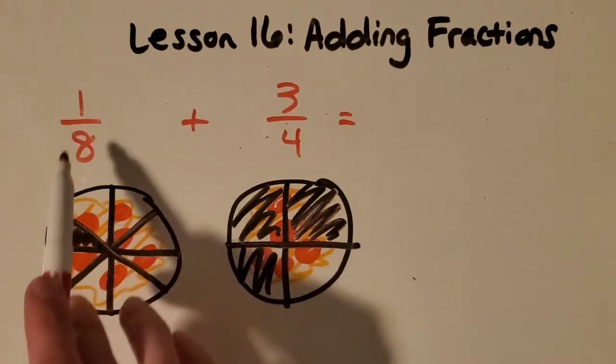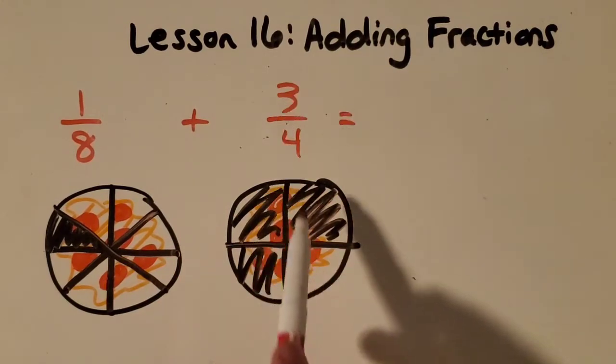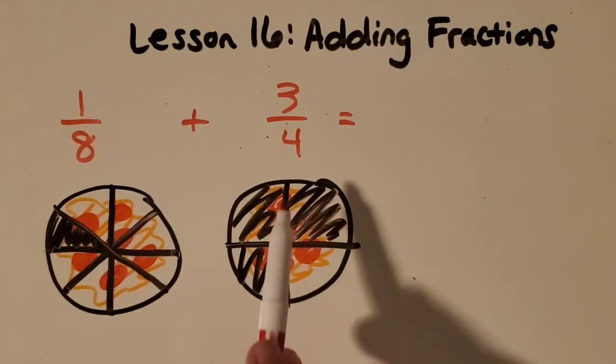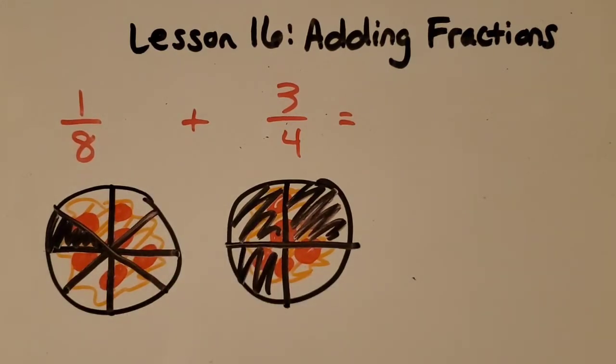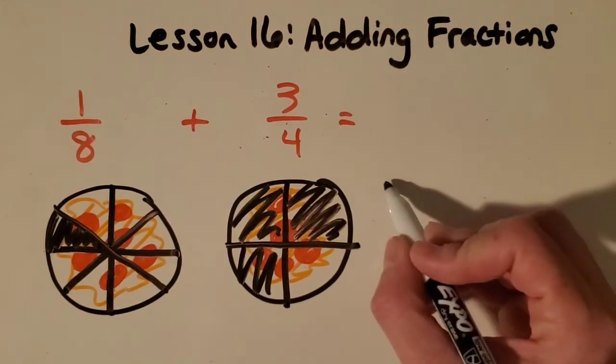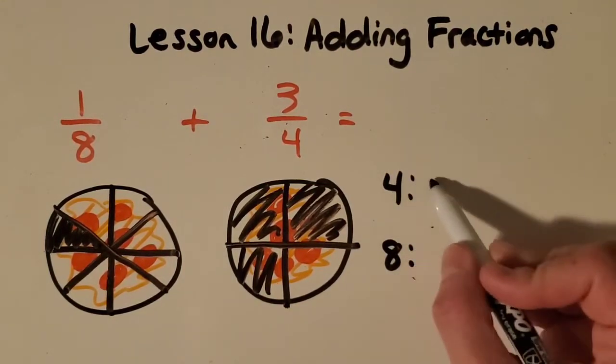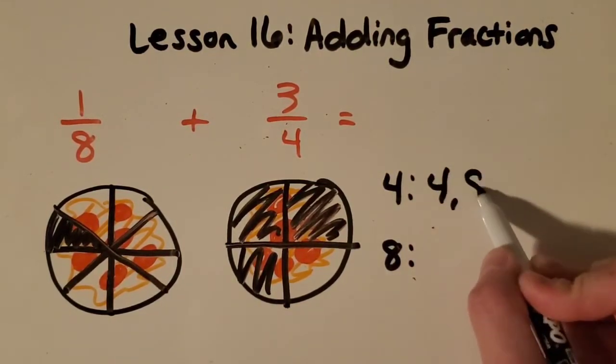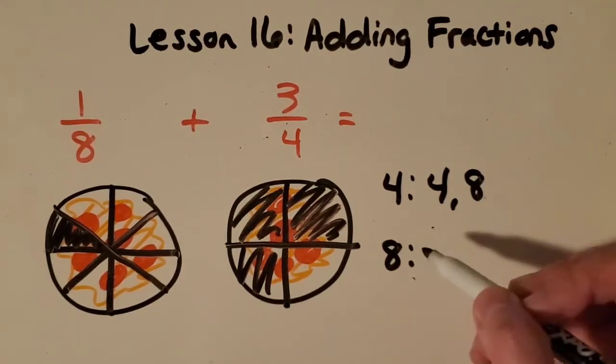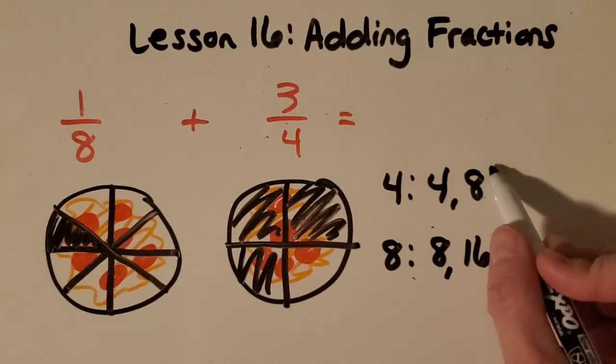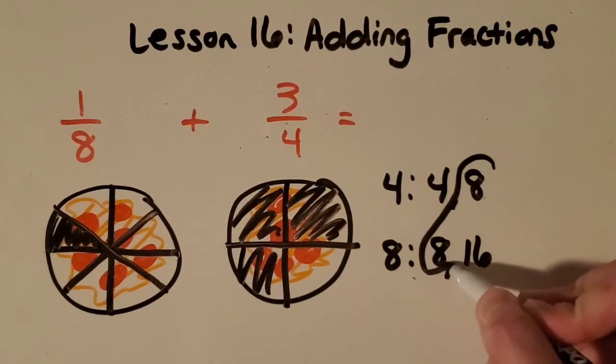So here we have one-eighth. Here's my picture of one-eighth plus three-fourths. And here's my other picture. And I don't have a common denominator yet. So I'm going to figure out what is a good common denominator. Let's list our fours and our eights. So four, eight. I'm going to stop because I already noticed the eight. Eight, 16. We already have one in common, the eight.